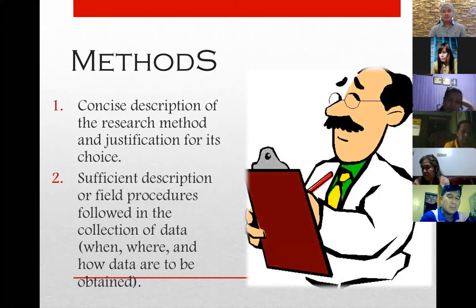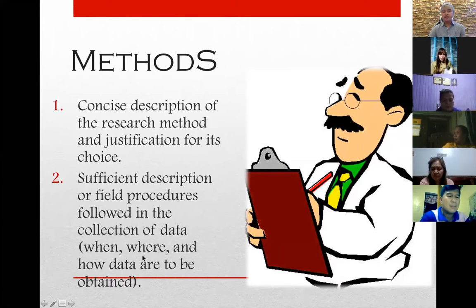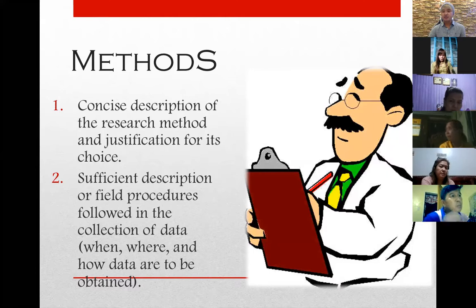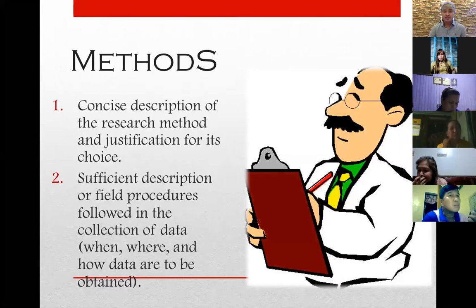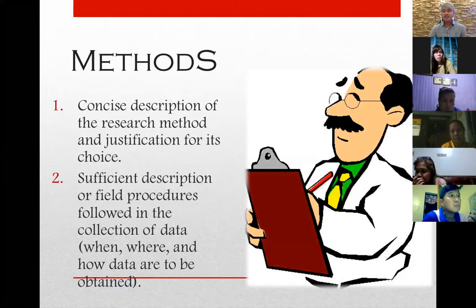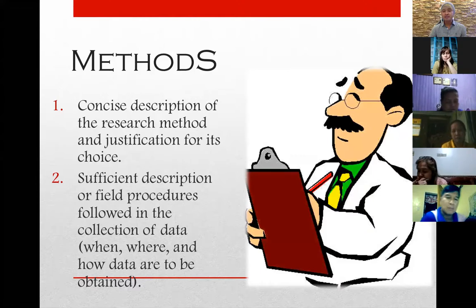There should also be a sufficient description of field procedures followed in data collection — as to when, where, and how data are to be obtained. Take note: in writing your methods, protect the identity of your respondent institution. When you say 'where,' you're talking about location. Naming or identifying the institution or school where you'll conduct the study is not acceptable because of the Data Privacy Act. Tomorrow, please attend our discussion — I've invited a special lecturer, Attorney Frederick Gayla, to talk about the Data Privacy Act in Research and Education.